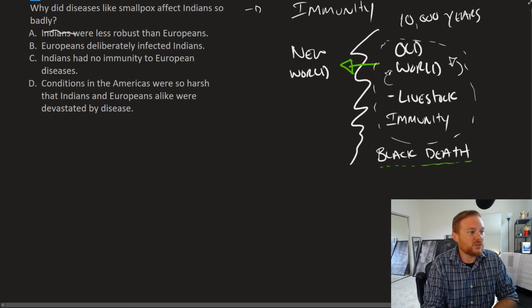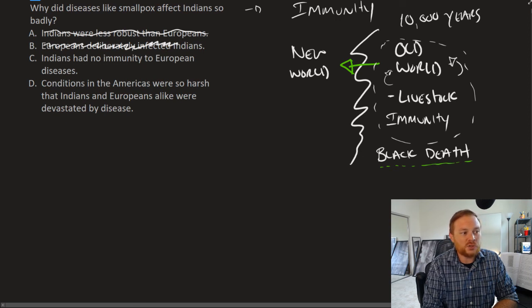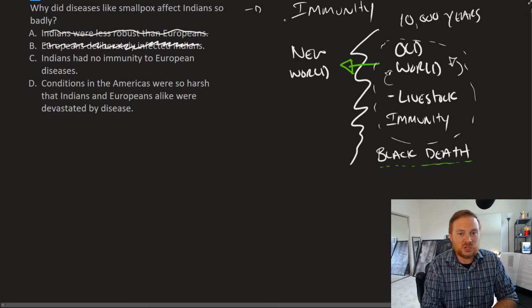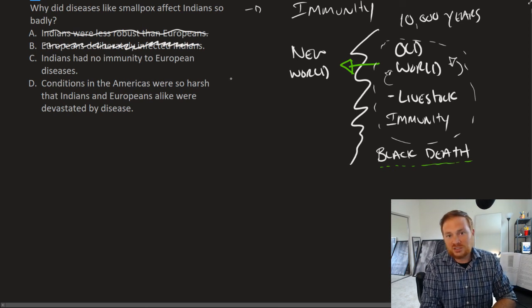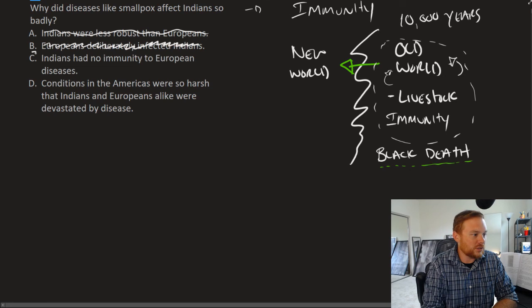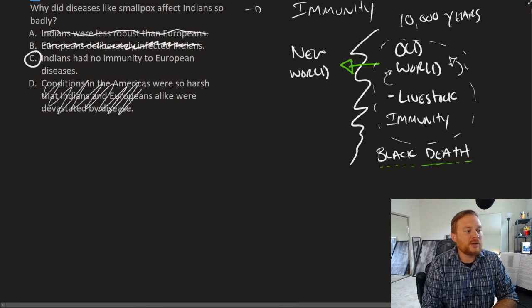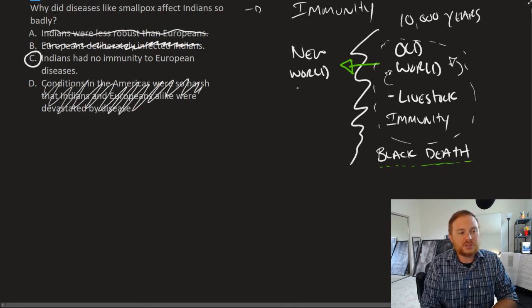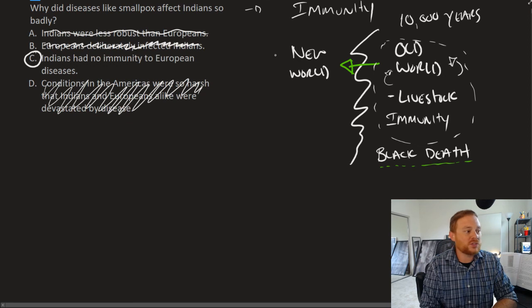Indians were less robust. Nope, that's not the right answer. Europeans deliberately infected Indians. This is not the right answer choice either. Even though it helped European colonization and helped Spanish conquest, the Spaniards didn't understand disease as much as the Native Americans did. It was unintentional, but certainly helped and facilitated European conquest of the New World. This is looking like the right answer. Conditions in the Americas were harsh. The Indians and Europeans alike were devastated by disease. Nope. This exchange of disease was more or less one-sided. So the correct answer is C, no immunity.